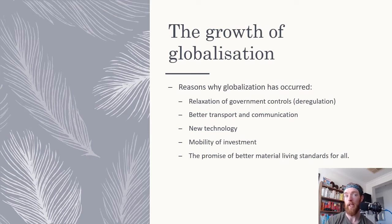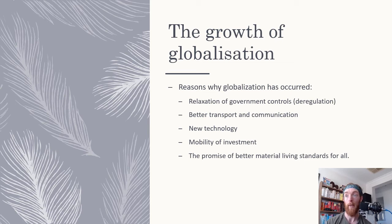The growth of globalization and why it has occurred: there has been some relaxation of government control, so deregulation. We've been moving towards more capitalist economies where businesses can decide what they want to produce and how much. We've also got better transport and communication — things can travel a lot quicker via air, and with the internet we can buy things online much faster. Businesses can exist in multiple parts of the world and communicate very quickly, which is pretty incredible.